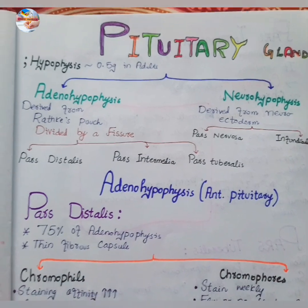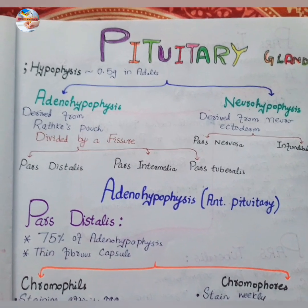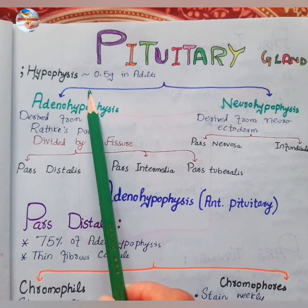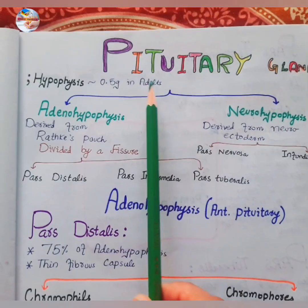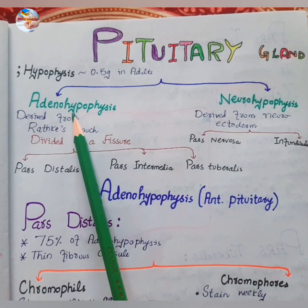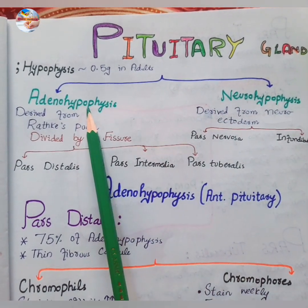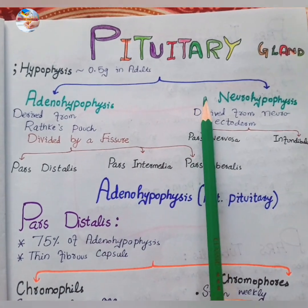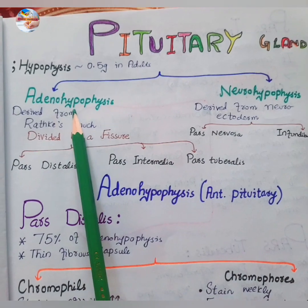In this video we are going to discuss the histology of the pituitary gland. The pituitary gland is also called the hypophysis, and its weight is about 0.5 gram in adults. It is divided into two parts: the adenohypophysis and the neurohypophysis. The adenohypophysis is also called the anterior pituitary, and the neurohypophysis is called the posterior pituitary.